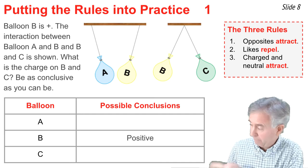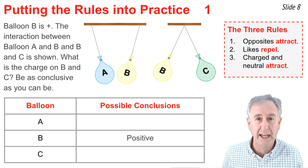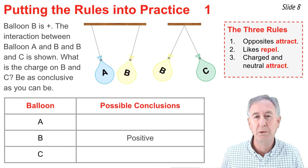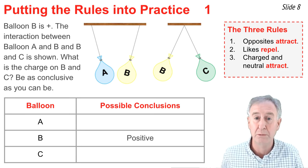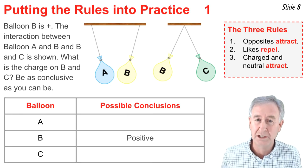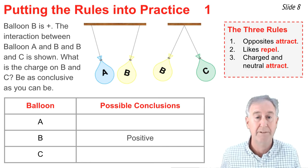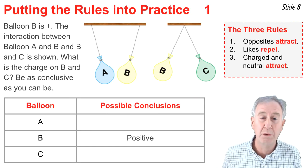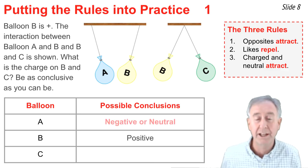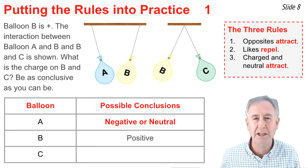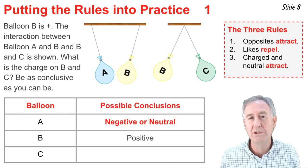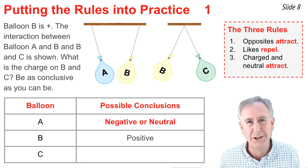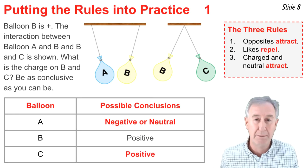Let's put these three rules to practice by filling in a table showing the charges of balloon A and balloon C based on how they interact with the positively charged balloon B. Balloon A is attracting balloon B, so there are two possibilities: balloon A could be negative (rule one — opposite charges attract), or balloon A could be neutral (rule three — charged and neutral attract). So balloon A is either negative or neutral. When it comes to balloon C, it repels balloon B. There's only one reason two objects repel: they have the same type of charge. So balloon C must be positive.